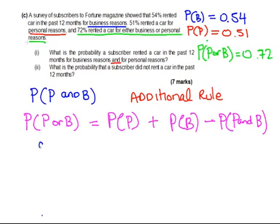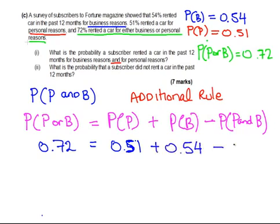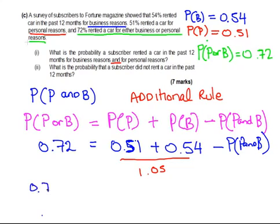So, we know what this is, 0.72, and we know what these two values here, this is 0.51 and 0.54. We don't know what this is yet, so we are just going to call that P and B. Now, add these two values together, we get 1.05. So, 0.72 equals 1.05 minus the probability we are interested in.